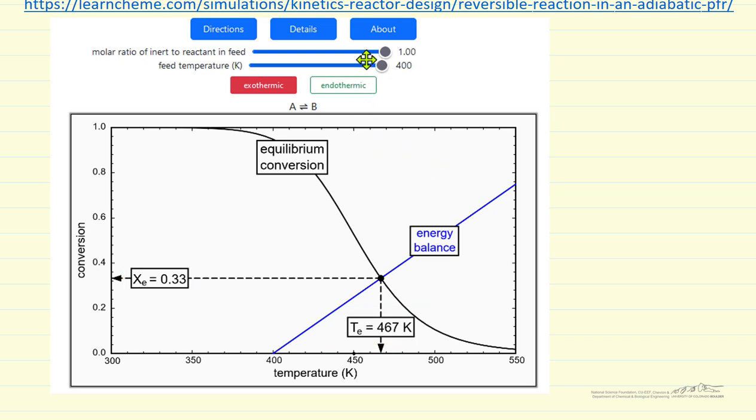Now we can change the feed temperature. Right now we're at 400 degrees, which is the temperature here. We can also change the presence of inert. Inert will affect conversion because if we feed inert, we have to also raise the temperature of that inert, which means the equilibrium temperature will not be as high. And therefore, the equilibrium conversion will increase as we add more inert. Because this reaction A goes to B, the inert is not going to affect equilibrium otherwise.